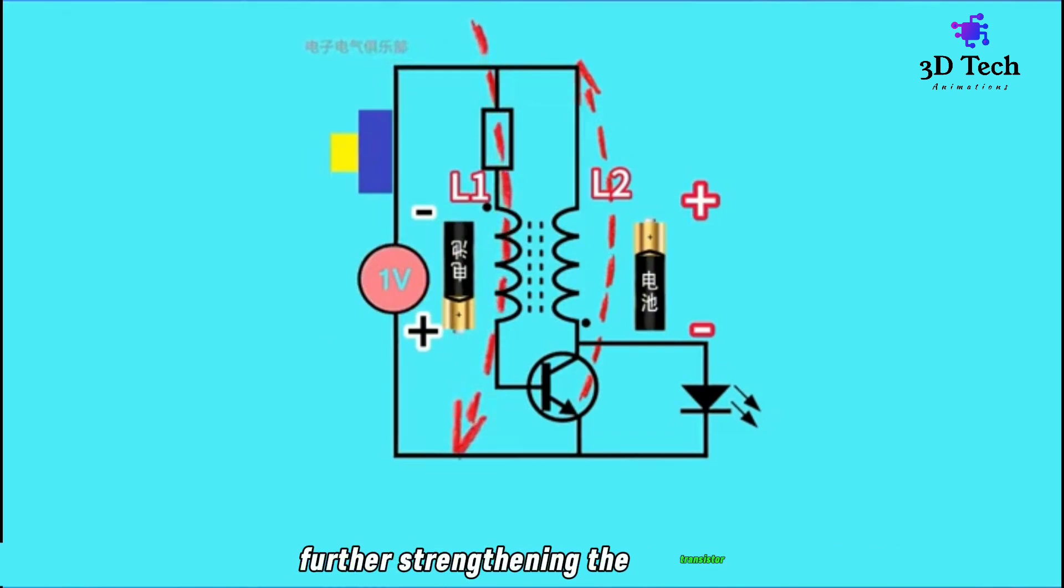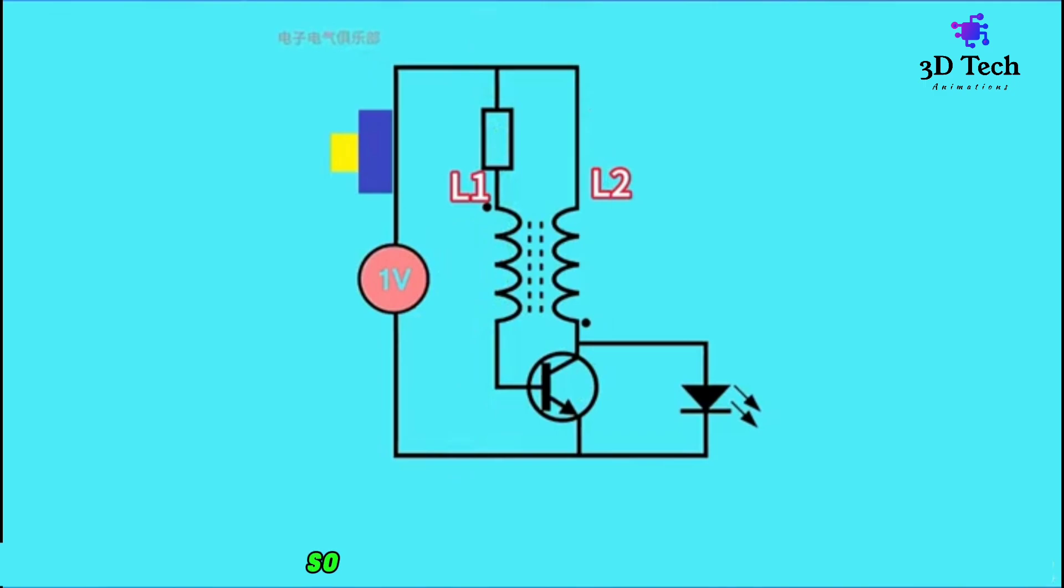This further strengthens the transistor base current, so the transistor saturates quickly. After saturation, current flowing through L2 no longer increases.